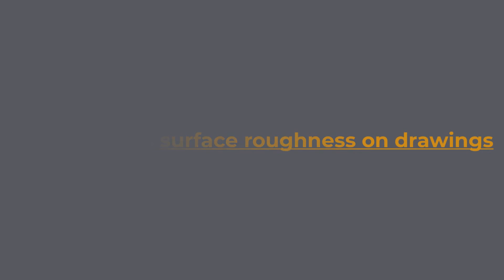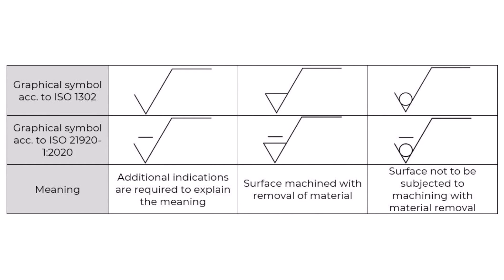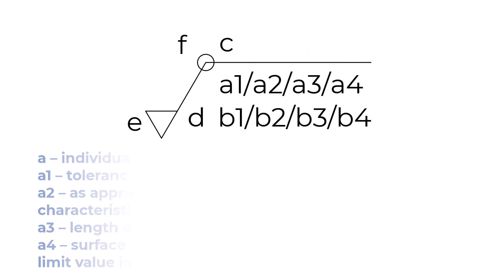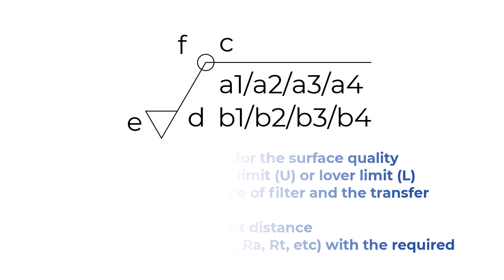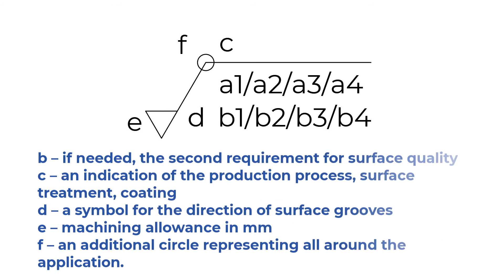Representing Surface Roughness on Drawings: The requirements for surface quality are defined on engineering drawings with the use of graphical symbols. You can see both the graphical symbols according to ISO 1302 and ISO 21920-1-2020 in the table. The symbols can be expanded and populated with additional information: A — individual requirement for surface quality, including tolerance types (upper limit U or lower limit L), type of filter and transfer characteristics, length of measurement distance, and surface parameter (RZ, RA, RT, etc.) with the required limit value in μm; B — second requirement for surface quality if needed; C — indication of production process, surface treatment, or coating; D — symbol for direction of surface grooves; E — machining allowance in mm; F — additional circle representing all-around application. Additionally, there are symbols for the direction of surface grooves — pause the video to read through.